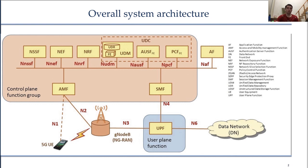The LTE and NR radio schemes and their corresponding core networks are very closely related, unlike the transition from 3G to 4G, where the 4G LTE radio access technology cannot connect to a 3G core network.